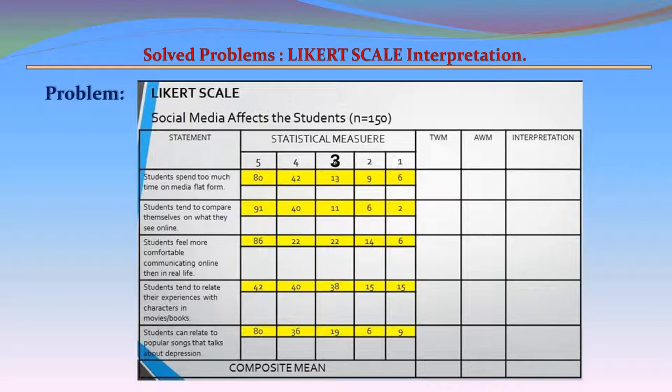There are 5 statements and 5 statistical measures in each statement. We need to work out the TWM (Total Weighted Mean), AWM (Average Weighted Mean), and the interpretation.